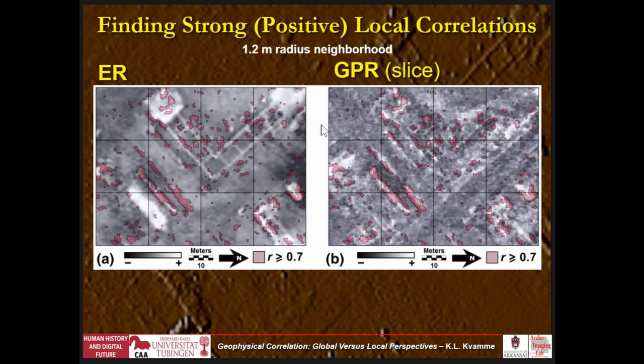What is high correlation? I arbitrarily took R greater than 0.7 — that's 49%, or about half the variance in common, shown in red here. Here's earth resistance and GPR. You can clearly see high correlation in some of these robust features, but there's also a lot of high correlations where there's no apparent anomaly. What's going on is minor perturbations in the background where there happen to be strong correlations in these minor background areas — just some random variation, no anomalies apparent at all, yet some high correlations.